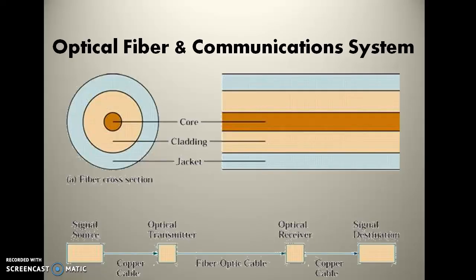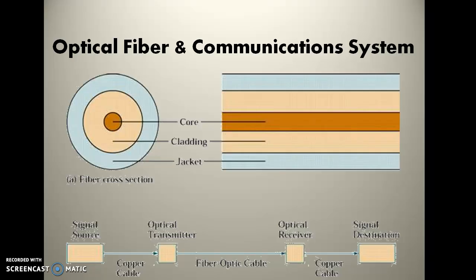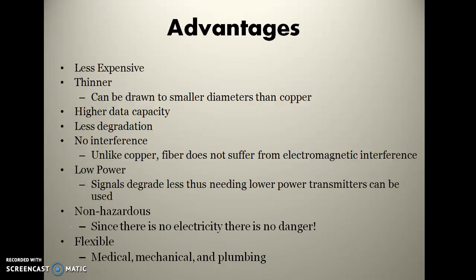This is the fiber optic communication system. There is a source followed by an optical transmitter, which converts the input into optical signals. Those optical signals are transmitted through the fiber optic cable and received at an optical receiver, from which the signal is carried to the destination.